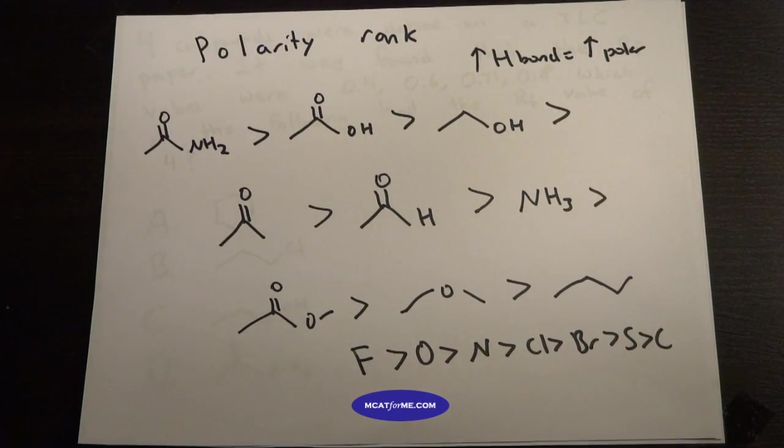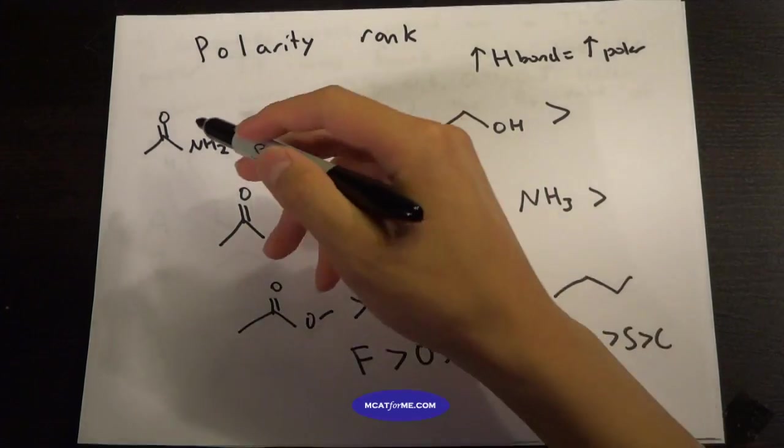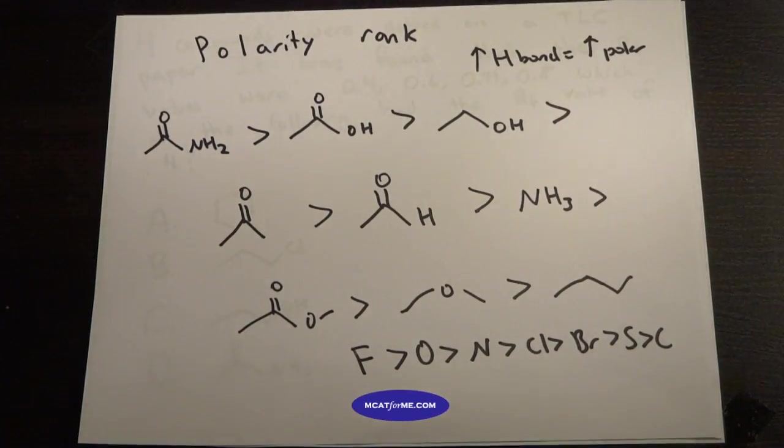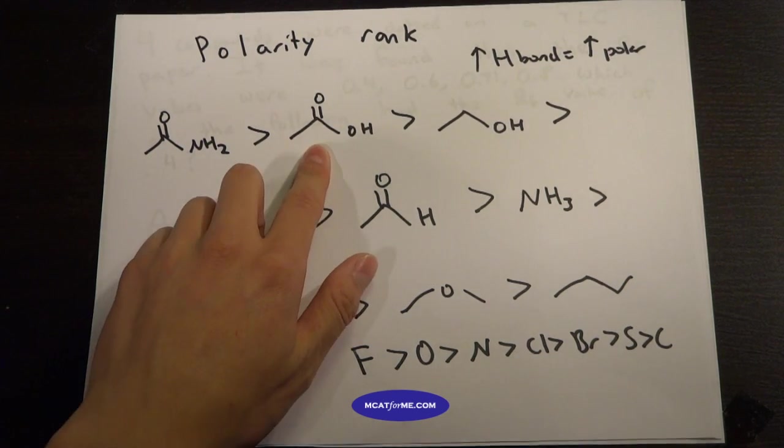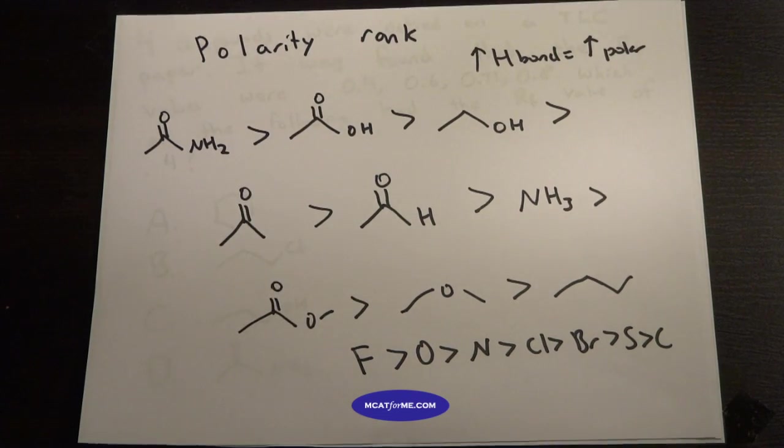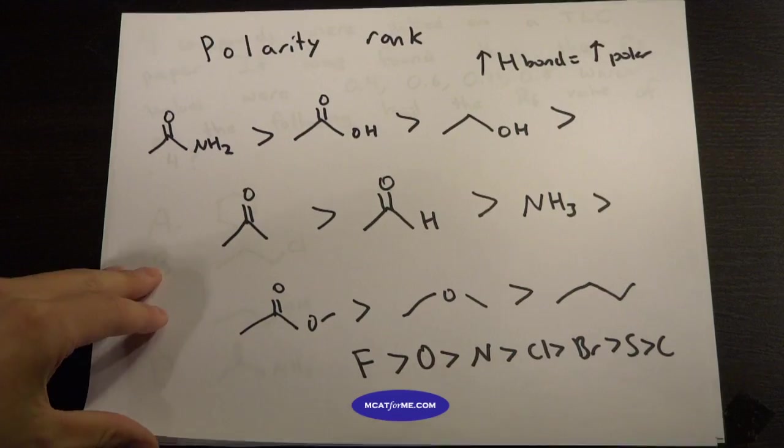So something that has more hydrogen bonding is more polar, which is why we would see the amide as being the most polar, the most hydrogen bonding out of any of them. It has two H's rather than just one over the carboxylic acid. That's why it would be the most polar. So this is something that you have to keep straight.